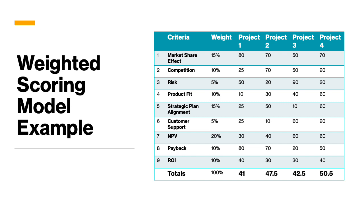If we're able to do two projects, it would be project two and project four. This is how we rank our projects from highest value to lowest value and draw the line — in this case between project two and project three. Project four and project two are the ones that move forward, while project one and project three are below the line and therefore either on hold until something changes or put on hold indefinitely.